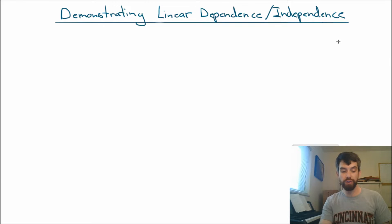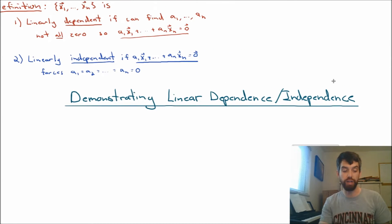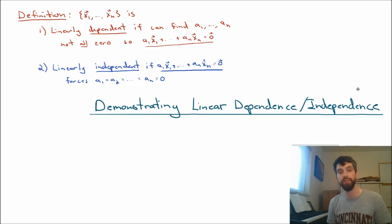First I'm going to remind ourselves what our definition of linearly dependent and independent was from the previous video. In either case we had to look at this expression where you take a linear combination of the vectors and set it at zero. The question was, is it the case that forces all of the coefficients to be zero, in which case you got linearly independent, or could you find some non-trivial set of coefficients, some coefficients where at least one of them was non-zero, which would give you linearly dependent?